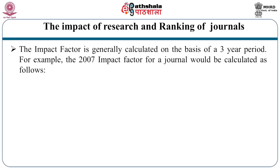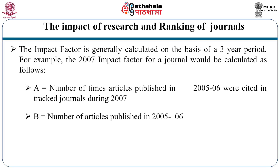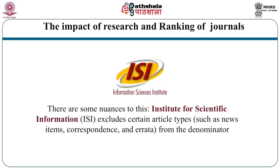The impact factor is generally calculated on the basis of a three-year period. For example, the 2007 impact factor for a journal would be calculated as follows: A equals the number of articles published in 2005 and 2006 that were cited in tracked journals during 2007; B equals the number of articles published in 2005 and 2006. The impact factor is calculated as A divided by B. That outcome is the impact factor of a journal.